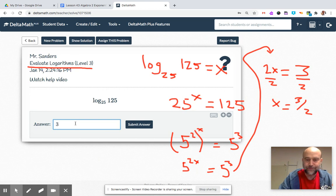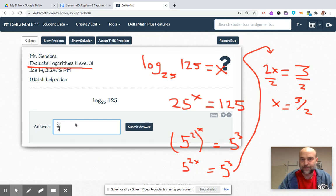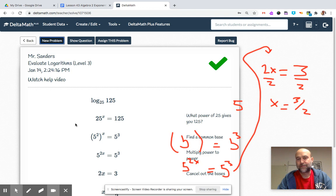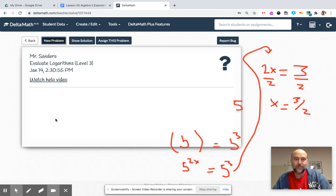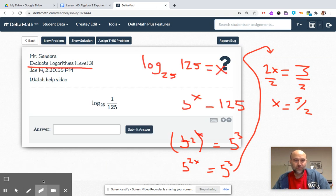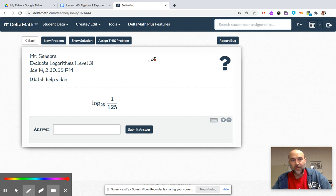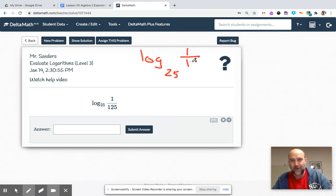Let me rewrite it. Log base 25, I already see where this is going, 1 over 125, but we can get there equals our X. Base is 25, exponent X, fill in the last number.